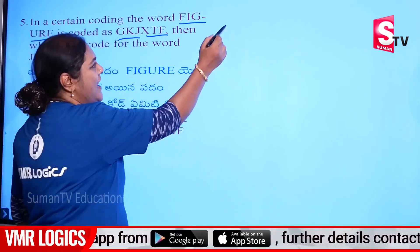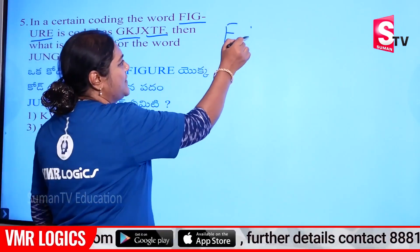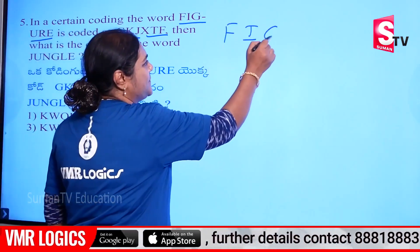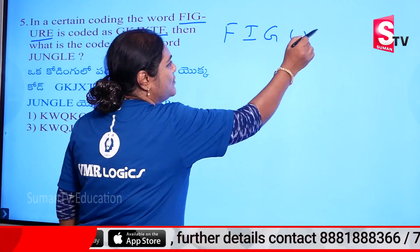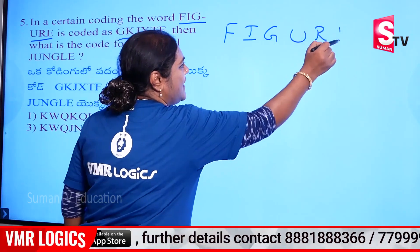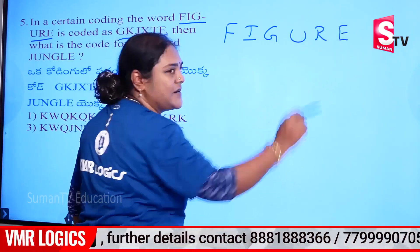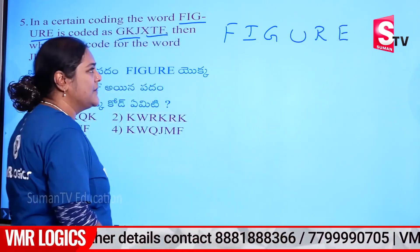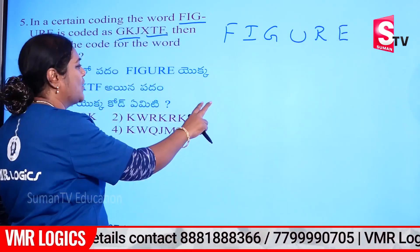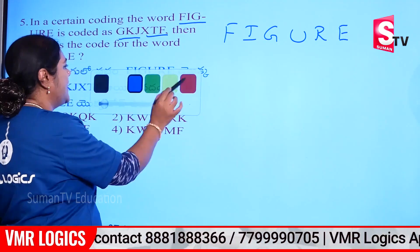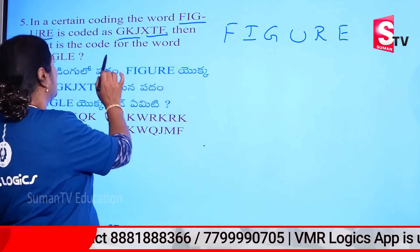Now, the code here. F, I, G, U, R, E. This is the code A letters.